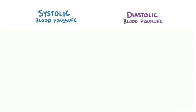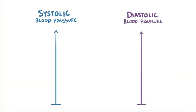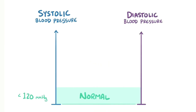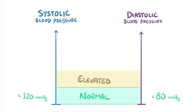The guidelines for categorizing blood pressure have recently changed to reflect a growing body of evidence showing that even moderately high blood pressures can significantly increase your risk for developing heart disease. Normal systolic blood pressure is defined as less than 120 millimeters of mercury, and normal diastolic pressure is less than 80 millimeters of mercury.